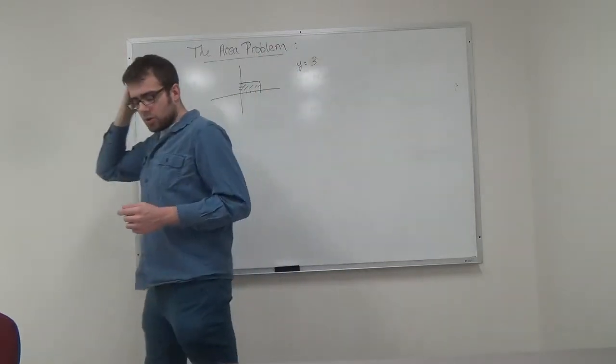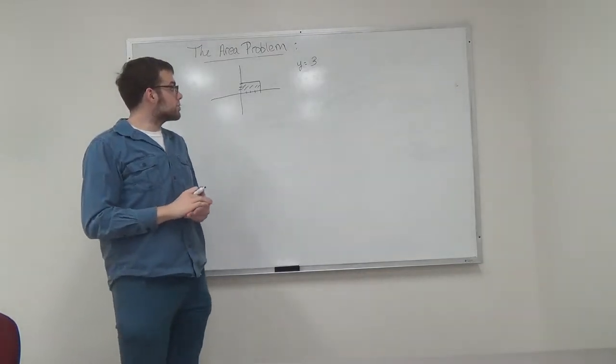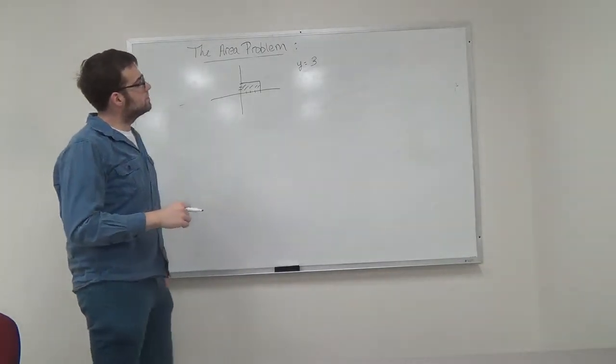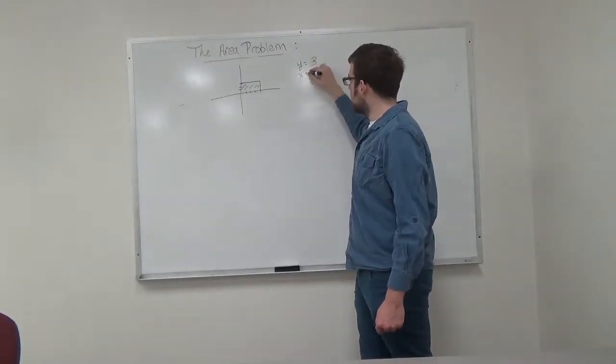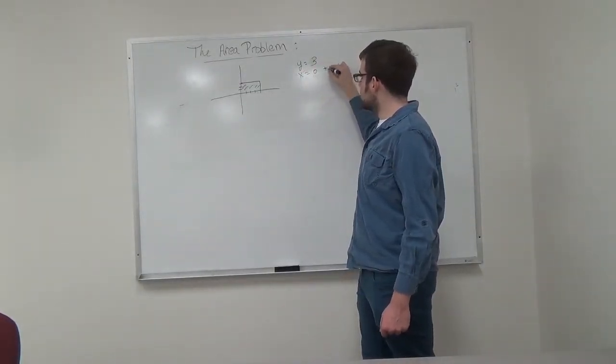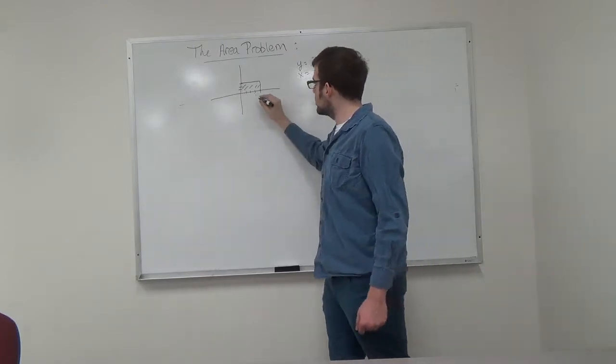First we're going to start off with y is equal to 3. And we're trying to find the area from x is equal to 0 to x is equal to 4.